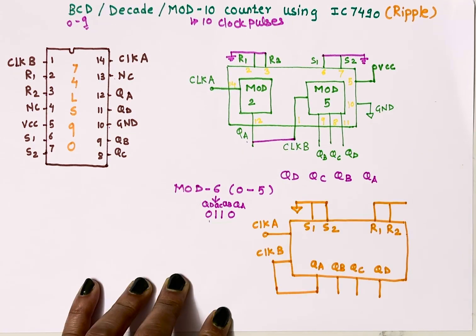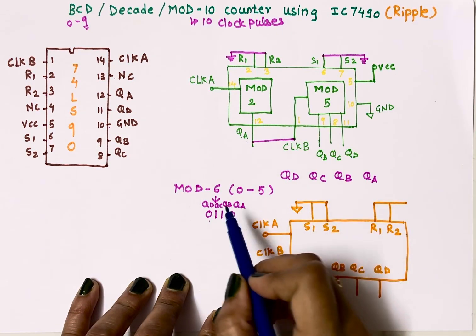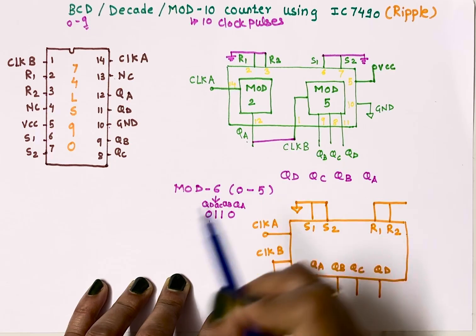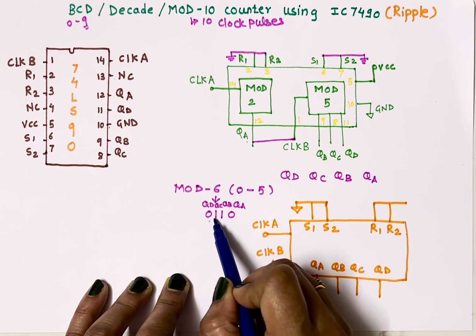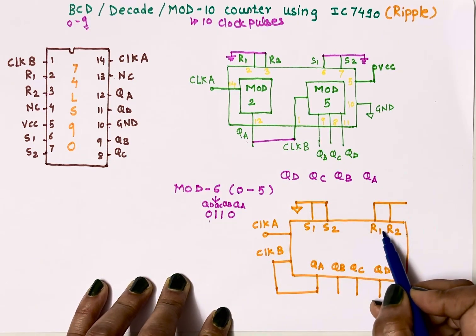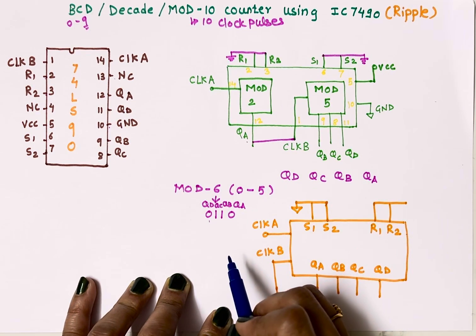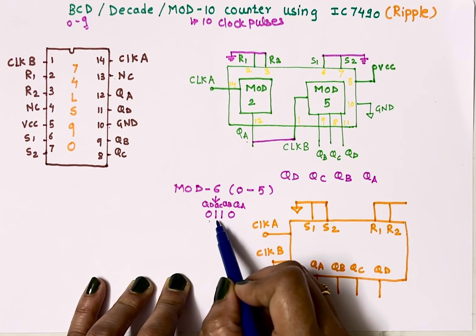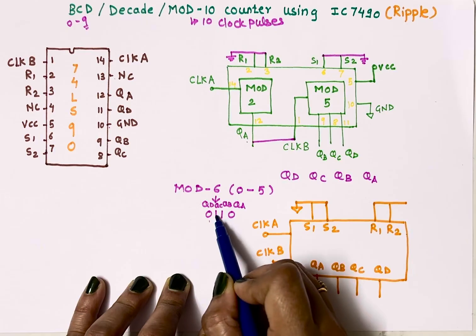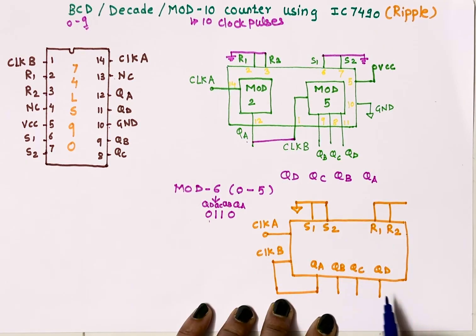My counter should count from 0 to 5, but as soon as number becomes 6 it should reset and it should again start counting from 0. So here you need to identify the outputs which are 1. QB and QC are 1.